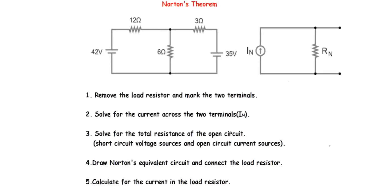In this lesson, we are going to read about Norton's theorem, which says that any linear circuit connected between two terminals can be replaced by Norton's current iN and Norton's resistance rN. So it can represent any linear circuit — like what I have here — by Norton's current, which is in parallel to Norton's resistance rN.